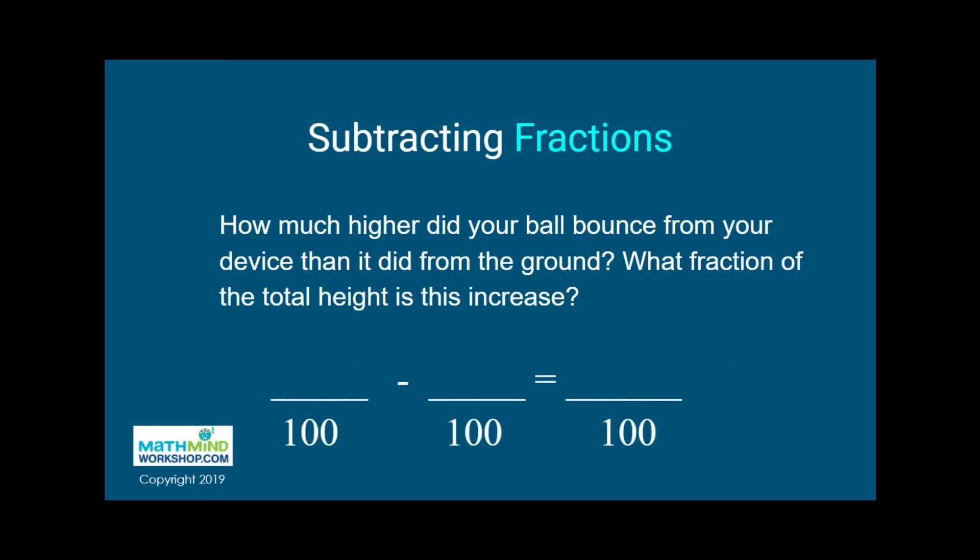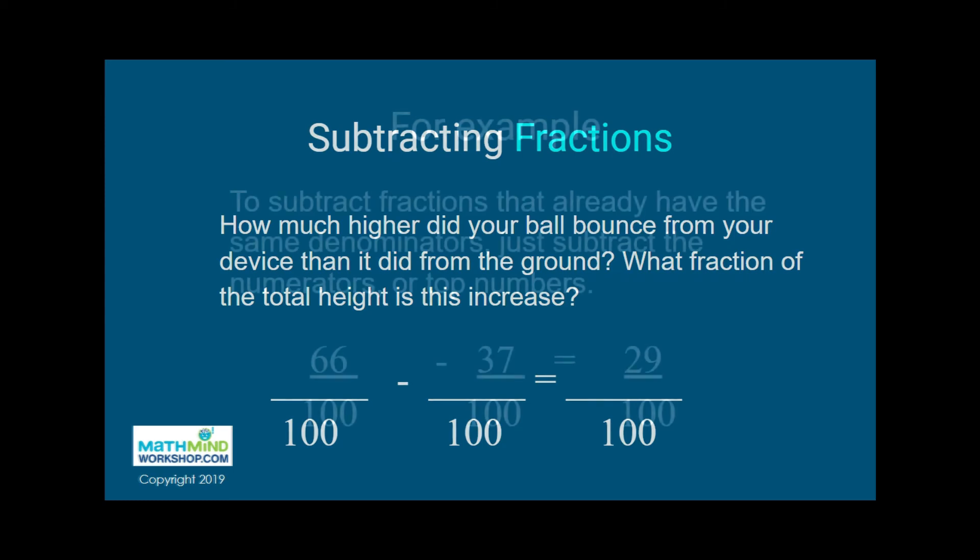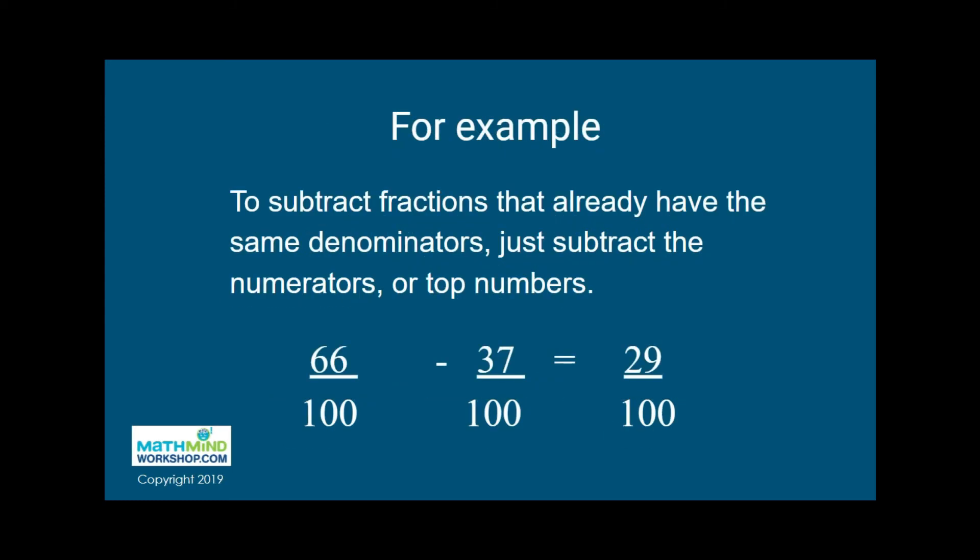You can probably figure out how much higher the ball bounced from your device than it did from the ground, but what fraction of the total height is this increase? One way to find out is to subtract your fractions. Remember that to subtract fractions, the denominators have to be the same. Luckily, the denominators already are the same, so you just subtract the numerators. Your answer will be a fraction of 100, or the fraction of the total height that the bounce increased. This will help you know how bouncy your device is.